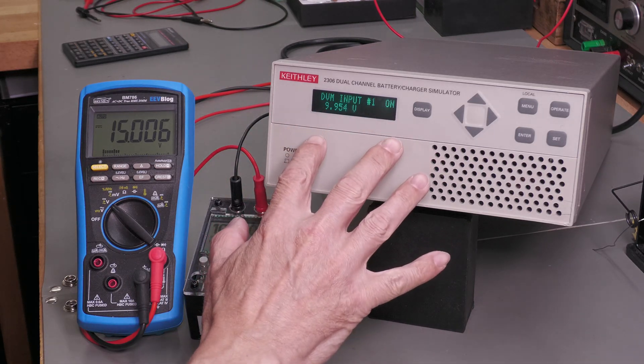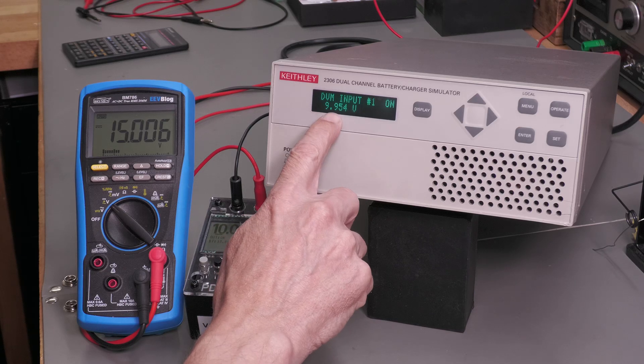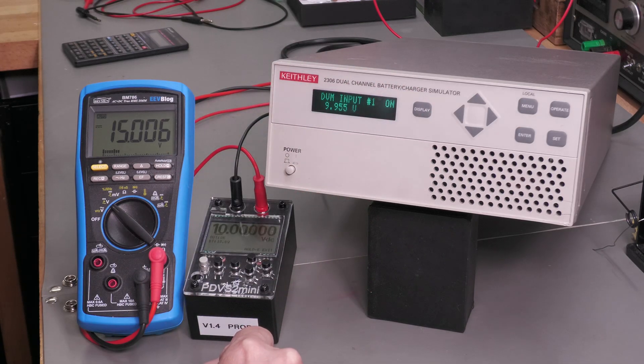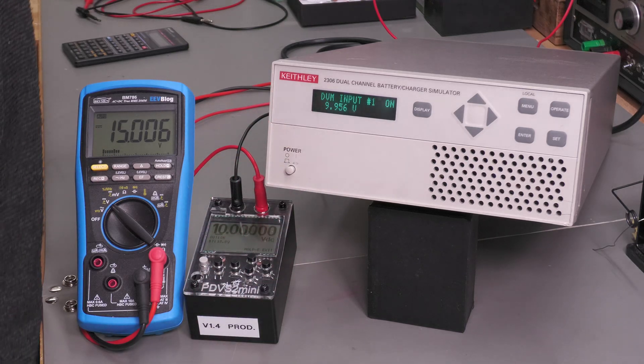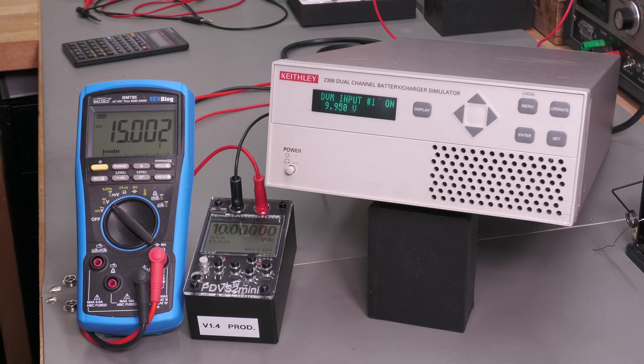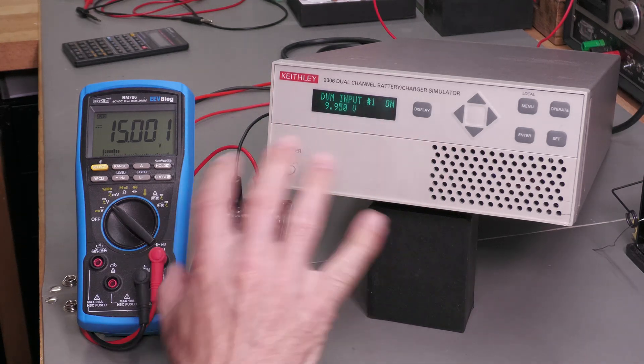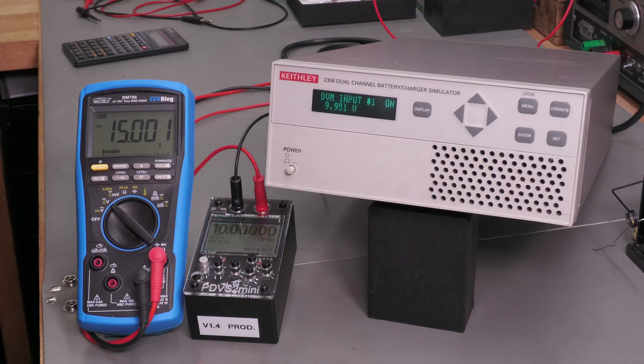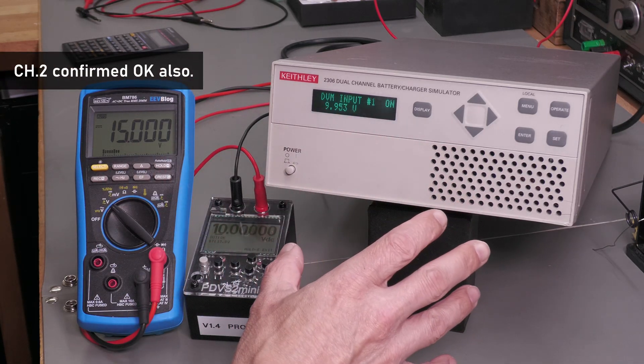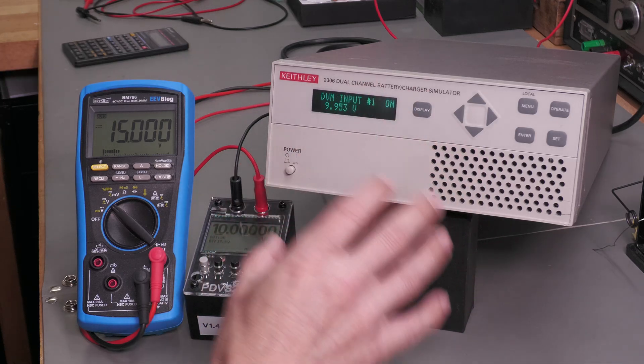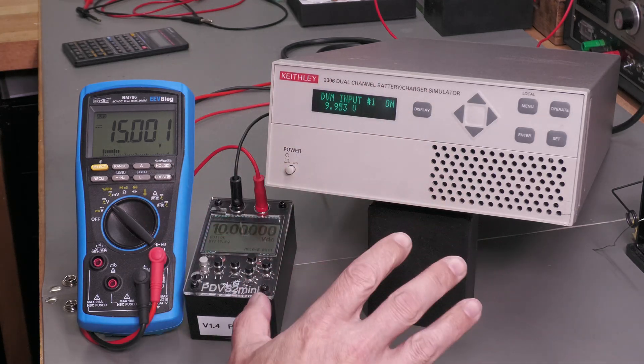So just to check, 9.954. I'll turn off the load on the power supply just to see if it has any effect on that DVM input. It's the electronic load off, and not really. So it looks like channel 1 is working great. Now obviously, I'll go over and check channel 2, making sure it's working in exactly the same way. I've no doubt it will be.